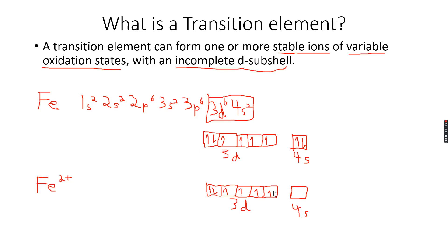I have six electrons over here and zero electrons over here. When defining a transition element, a transition element can form one or more stable ions of variable oxidation states with an incomplete d subshell. If you look at the Fe2+ ion, we have an incomplete d subshell.